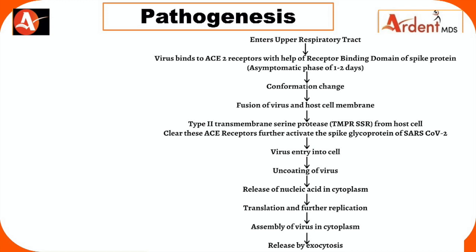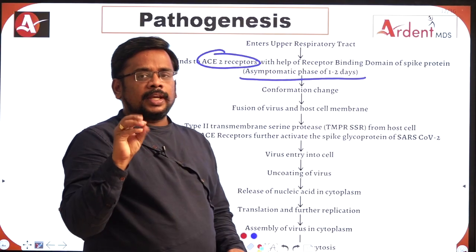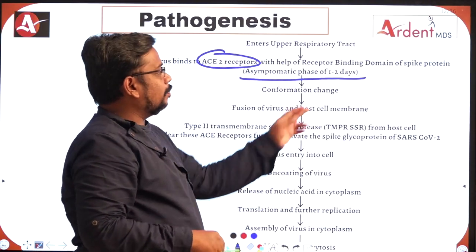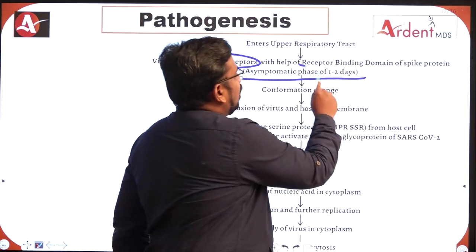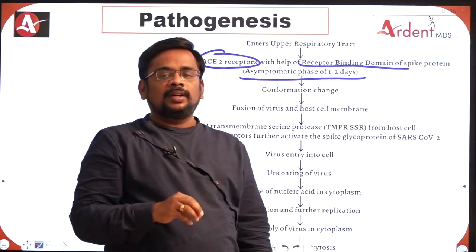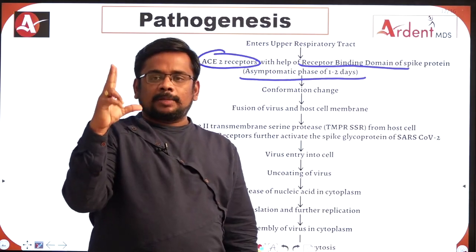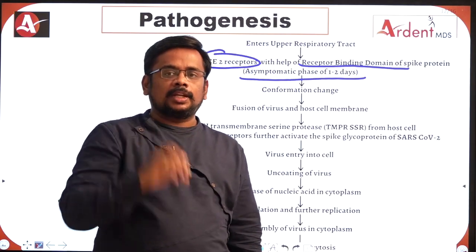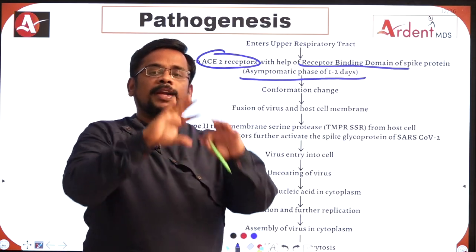Coming to the pathogenesis: this virus enters through the upper respiratory tract. In the initial asymptomatic phase of one to two days, the virus binds to a receptor called ACE2 — Angiotensin Converting Enzyme 2 — receptors. It binds with the help of the receptor-binding domain of the spike protein, which attaches to the ACE2 receptors.